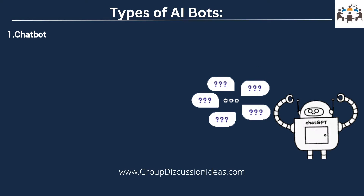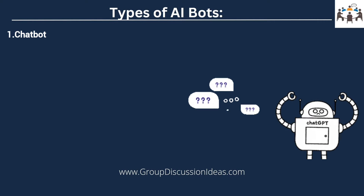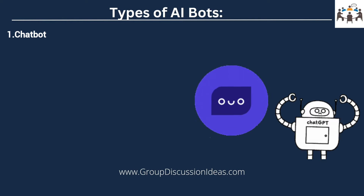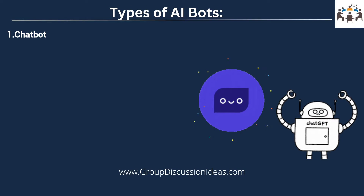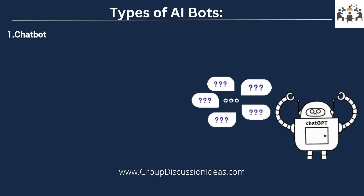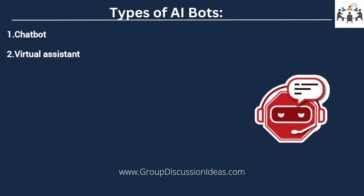A few examples are SBI Intelligent Assistant by the State Bank of India, the Ayushman Mitra chatbot by the Government of India, and DOM by Domino's. The next type is virtual assistant.